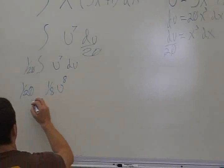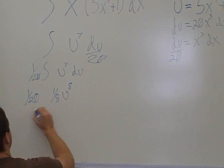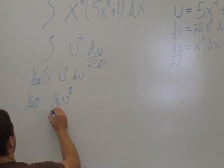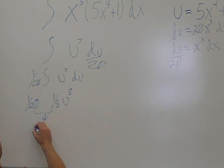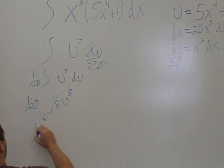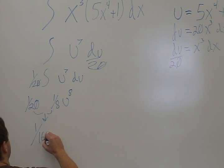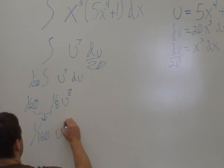The du is dropped. We have 1/20 and 1/8—multiply those together and we get 1/160 u⁸.